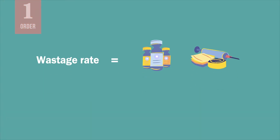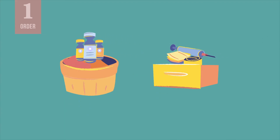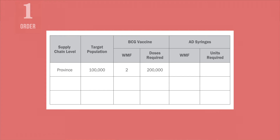The WMF will often vary depending on the item's wastage rate. You might have a wastage rate of 50% for vaccines, but a wastage rate of 10% for syringes. After all, unused syringes can be returned after a session, but unused doses of vaccines may not be. When ordering vaccines and supplies, you should always use the specific WMF for each item.